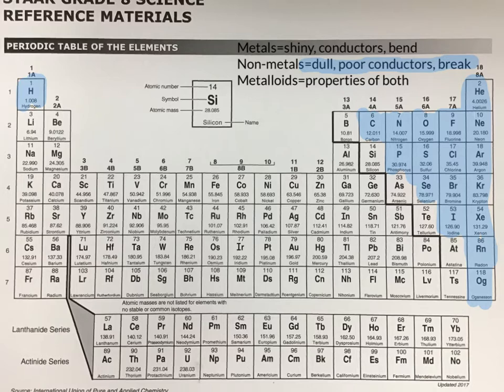Next up we have the metalloids, which are going to be here in green. They're going to be found along this black zigzag line, which we sometimes call the staircase or stair step on the periodic table. Your metalloids are going to have properties of both metals and nonmetals — sometimes they are shiny or reflective, and other times they do not conduct heat or electricity.